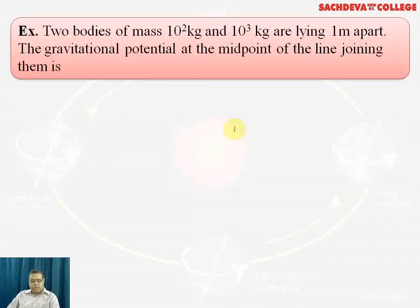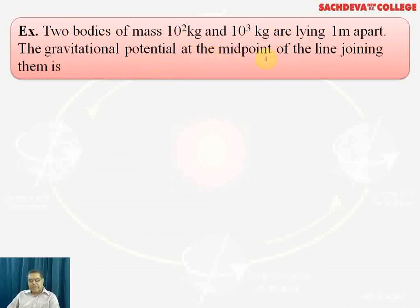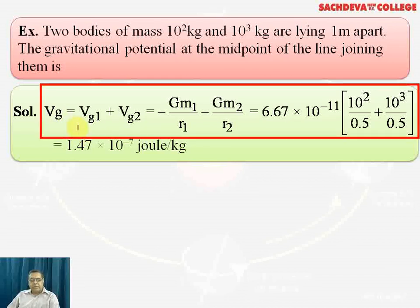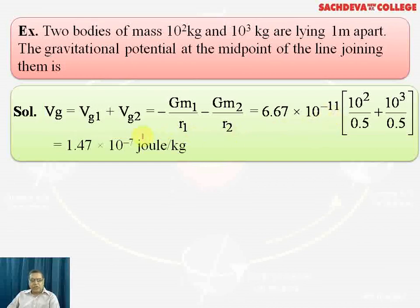For an example: two bodies of mass 100 kg and 1000 kg are lying one meter apart. We need to find the gravitational potential at the midpoint of the line joining them. Since potential is scalar, we find Vg1 and Vg2 separately using V = -GM/r for each mass, then algebraically add them. The result is -1.47 × 10⁻⁷ joule per kilogram.